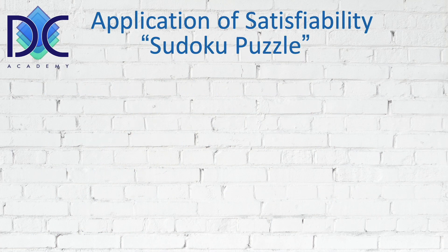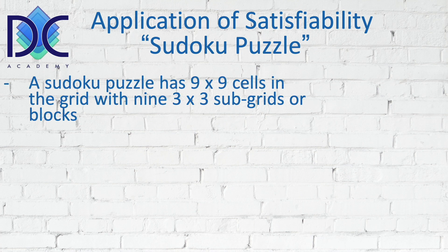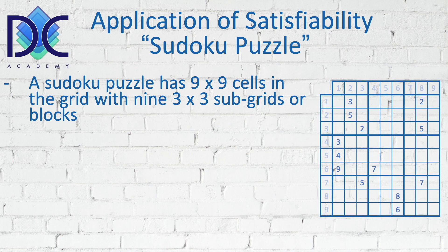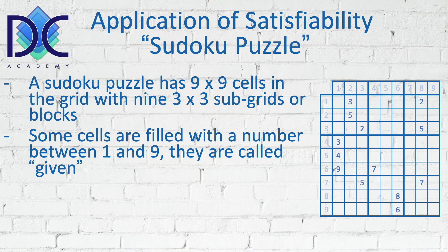We are going to look at the application of satisfiability on a Sudoku puzzle. The Sudoku puzzle has a 9×9 grid of cells with nine 3×3 subgrids, also called blocks. Rows are numbered 1 to 9 and columns also 1 to 9. We start with an unsolved puzzle where some numbers have already been added to the grid — these are called the givens, and represent the start of the problem.